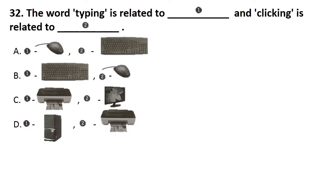The word typing is related to 1 and clicking is related to 2. Answer is option B. Typing is related to the keyboard and clicking is related to the mouse.